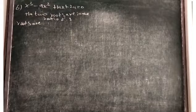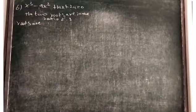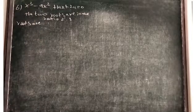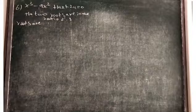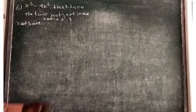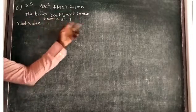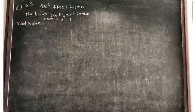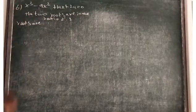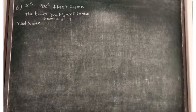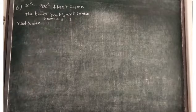In this question, they have given a cubic polynomial of degree 3 and ask to find the roots. One condition is given: two roots are in the ratio of 2 is to 3. The degree 3 confirms that it has only three roots, and any two of those roots have a ratio of 2 is to 3.